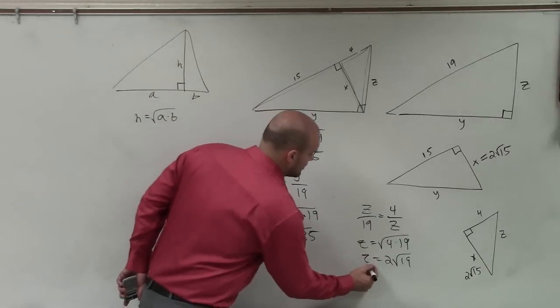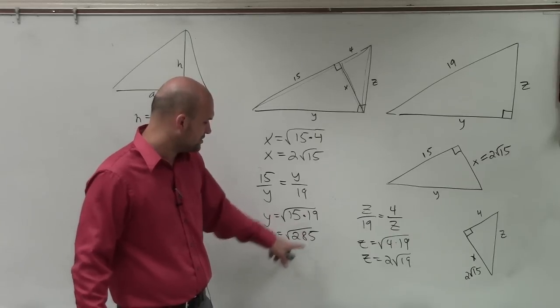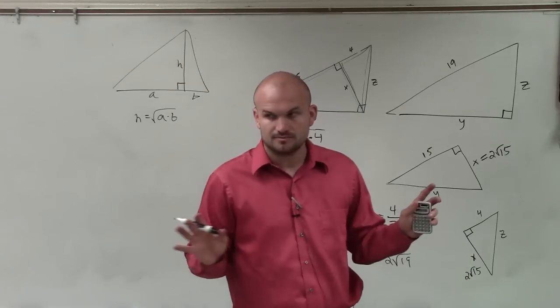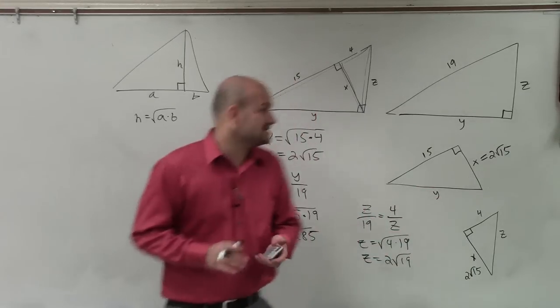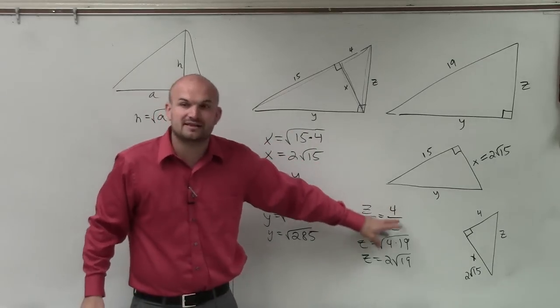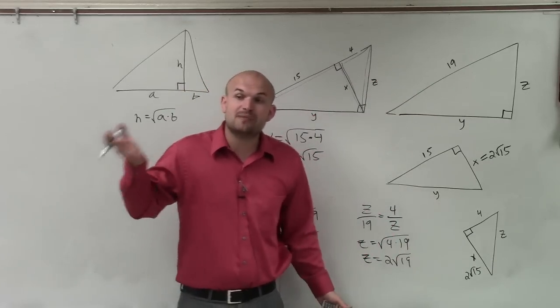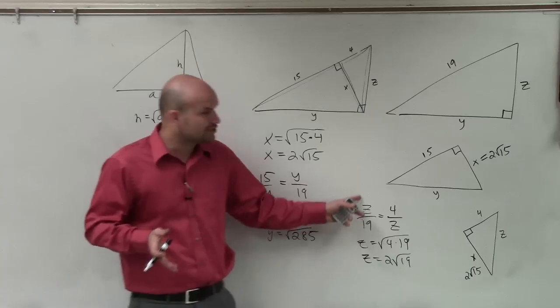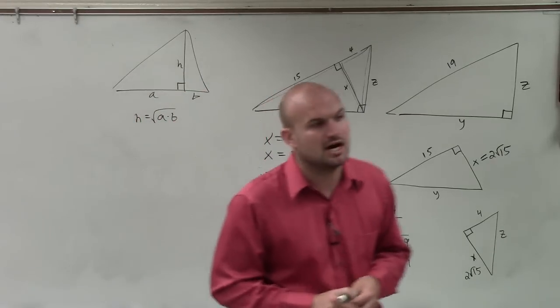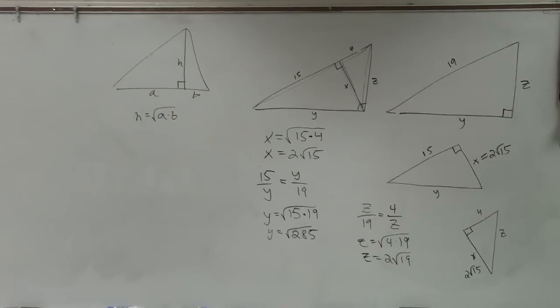So therefore, my final solution, x equals 2 times the square root of 15, y equals the square root of 285, and z equals 2 times the square root of 19. Any questions? The best thing I would remember, guys, this one's pretty easy to remember, the altitude. You guys might forget how to find the legs. So what I would just recommend is just draw the three triangles and set up your ratios. Just remember, when you're setting up your ratios, you're going to be finding the geometric mean. So your ratio should have the same means on their cross product.